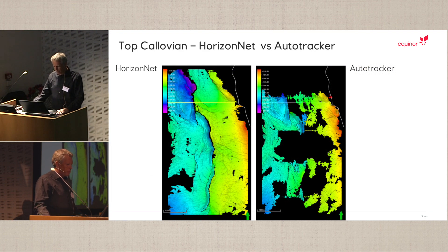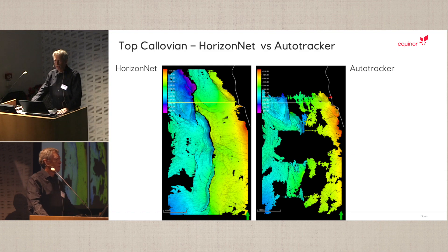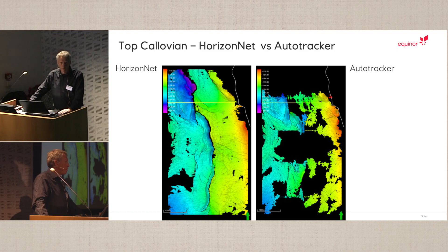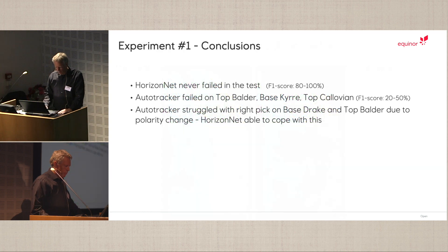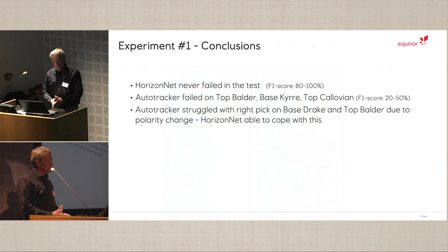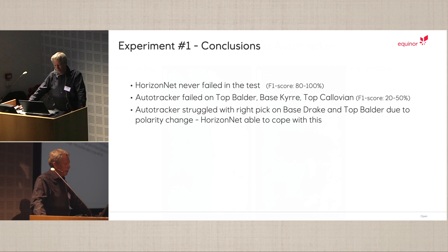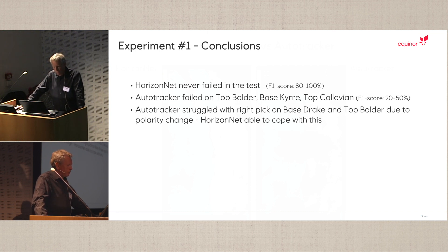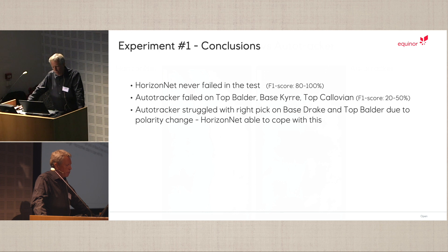We found the HorizonNet result quite impressive. The conclusions from this first experiment were that HorizonNet never failed in the test, with F1 scores between 80% and 100%. The auto-tracker failed on some of the horizons and also struggled with horizons that had a phase shift.